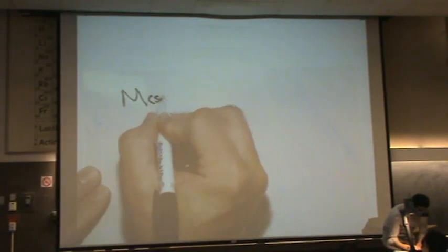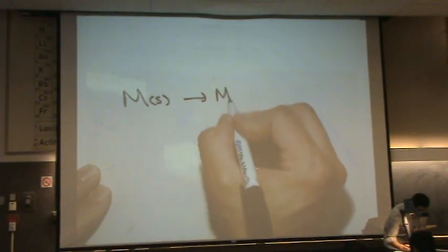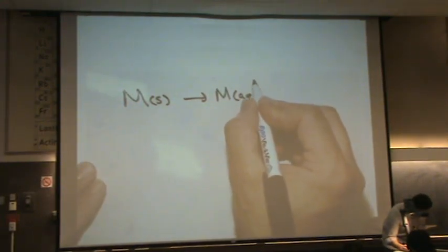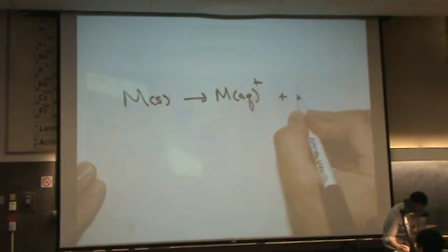Let's say we have a metal in a solid state, and it goes to the aqueous state. Let's say it's a plus one charge, so we have one electron.